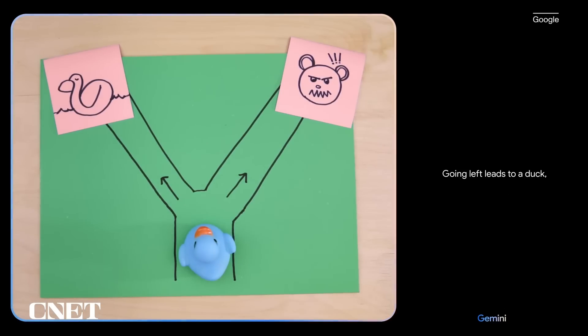Which way should the duck go? Going left leads to a duck, which is a friend. Going right leads to a bear, which is a foe.